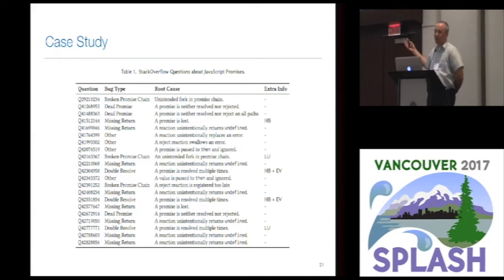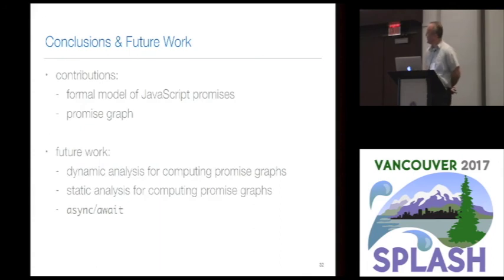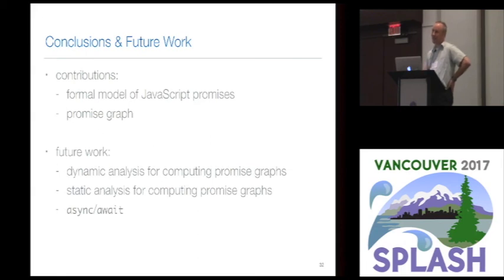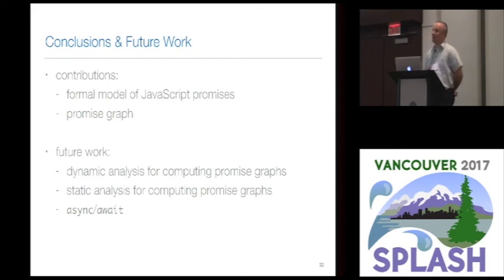To conclude, we developed a formal model of JavaScript promises and proposed the promise graph as a tool for debugging promise-based JavaScript code. As future work — which we've already started — we plan to build static and dynamic analyses for building promise graphs so we can automatically perform these studies rather than doing it by hand. We also plan to look at the async/await construct in ECMAScript 6, which is a more disciplined way of writing promise-based JavaScript code. Thank you very much.